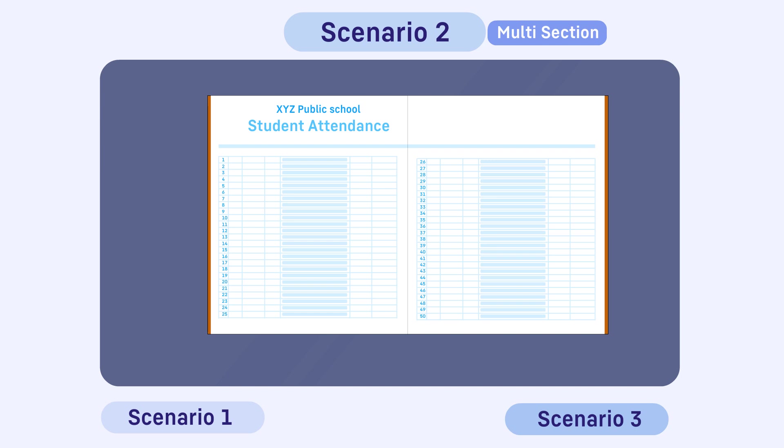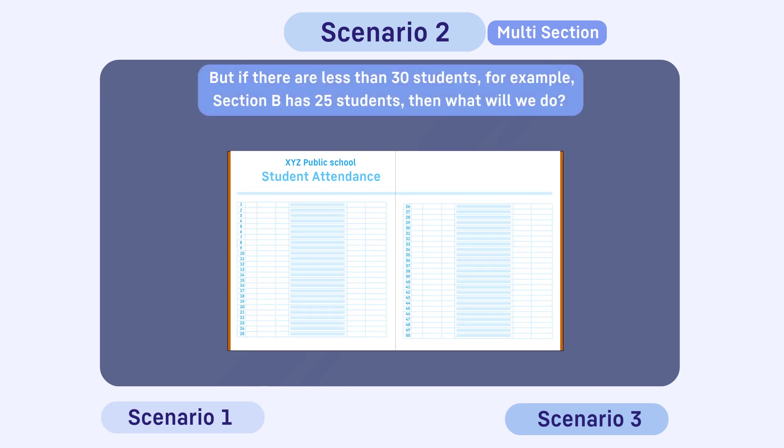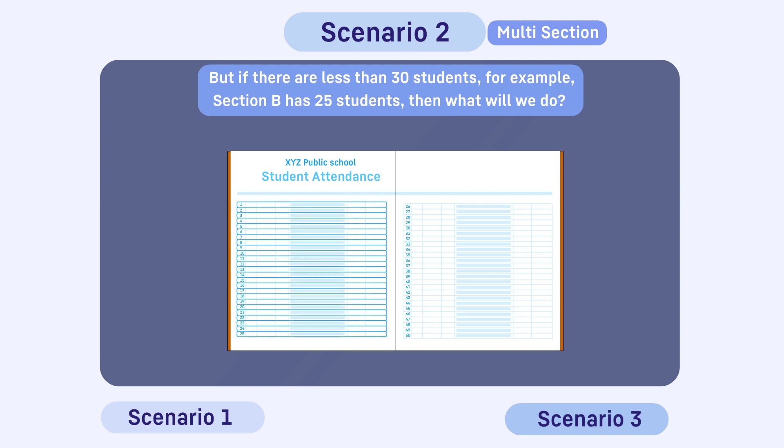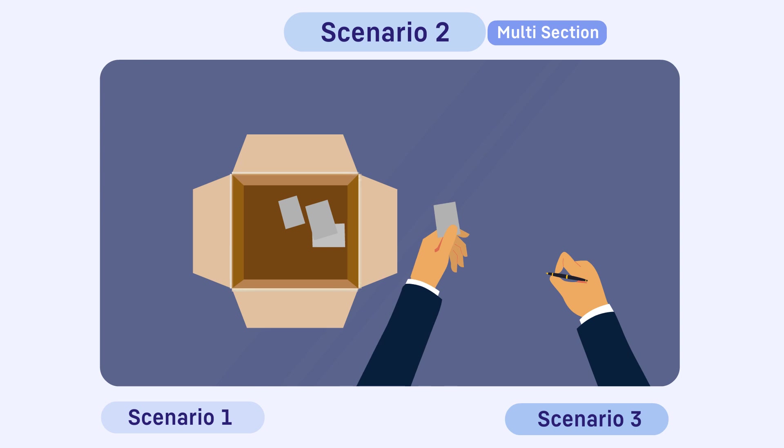Now at this point, check how many students are in section B. In case there are exactly 30 students, then the survey will be conducted with these 30 students. But if there are less than 30 students, for example section B has 25 students, then as we have other sections A, C, D, E, we will repeat the chit and draw method to get another section.